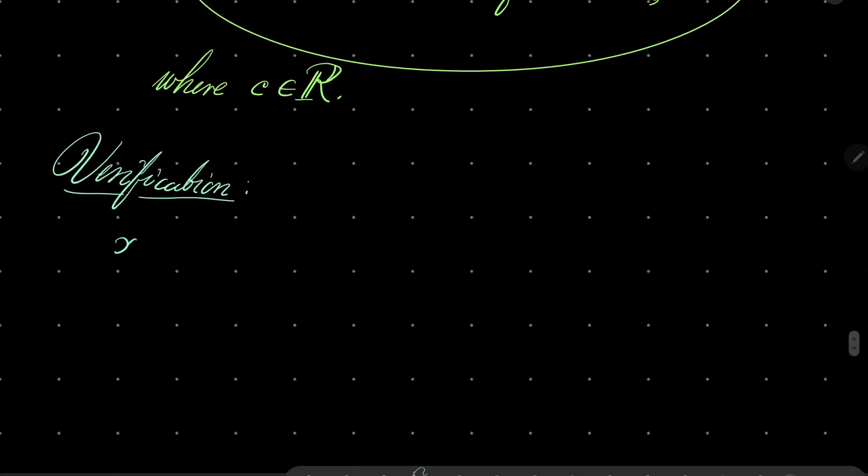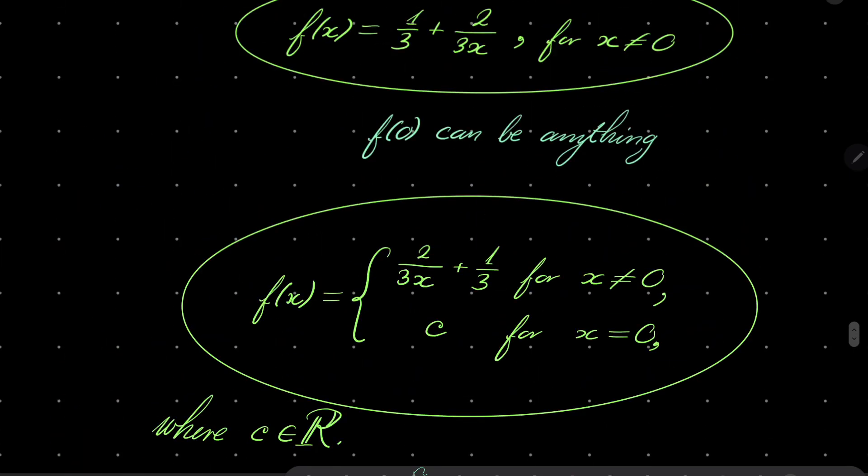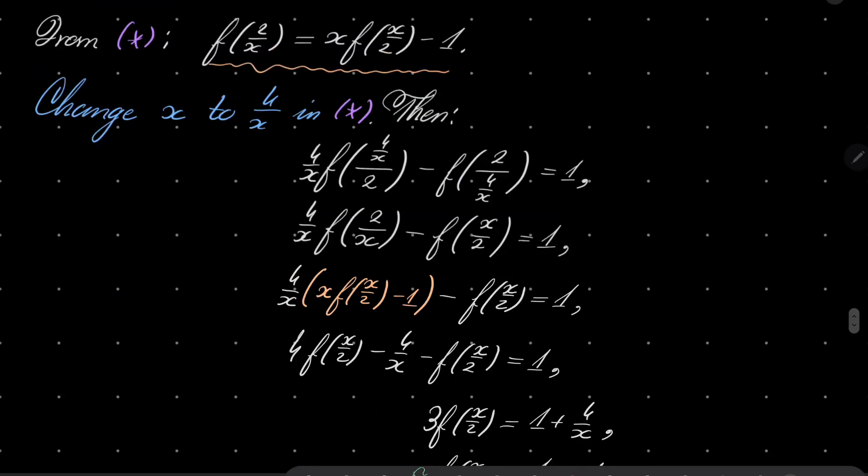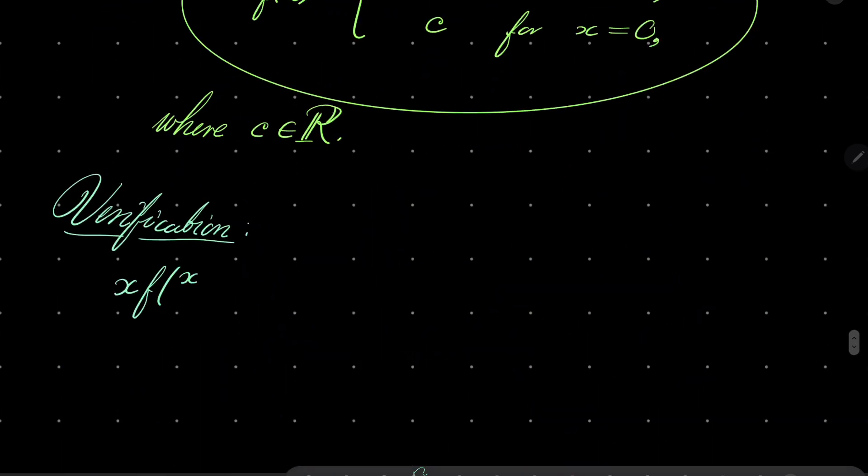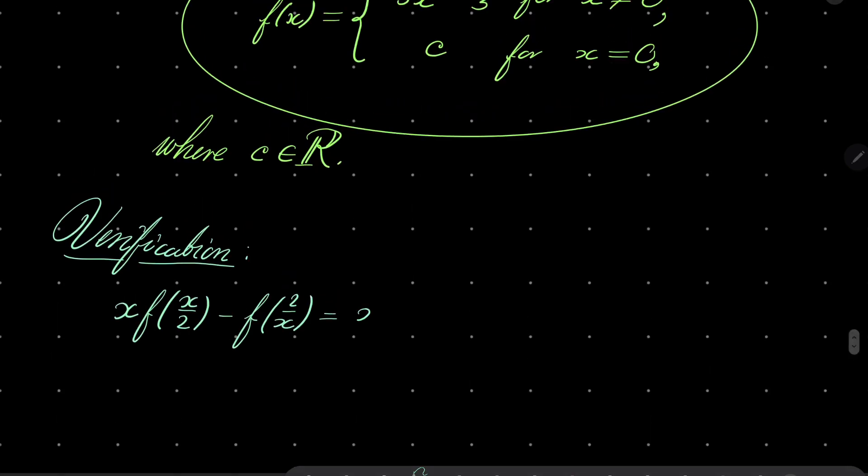Verification: xf(x/2) minus f(2/x). Well, notice that x is assumed to be not zero, so we have x times (2/(3(x/2)) + 1/3) minus...